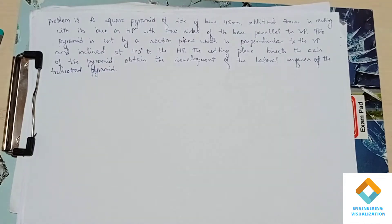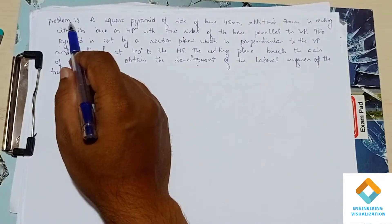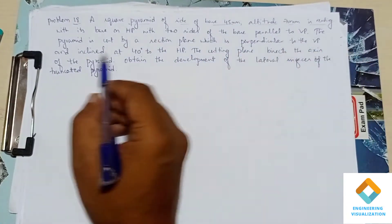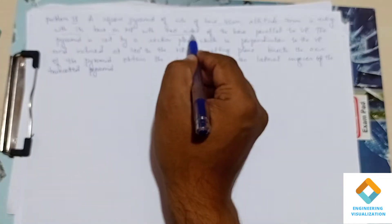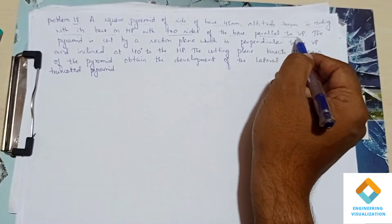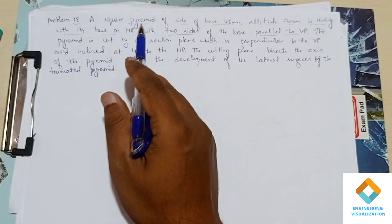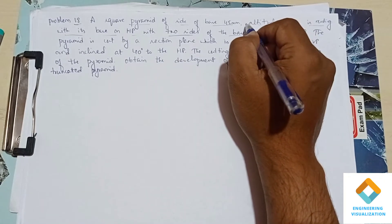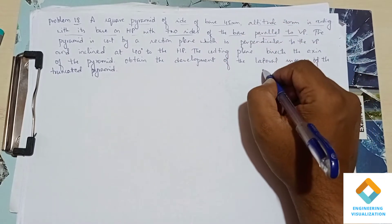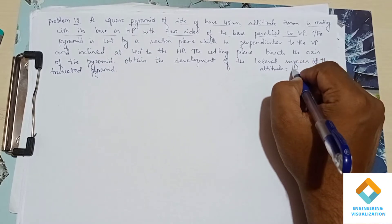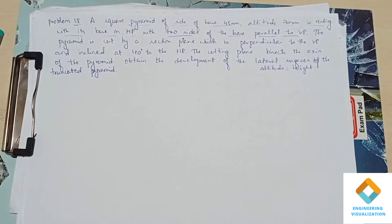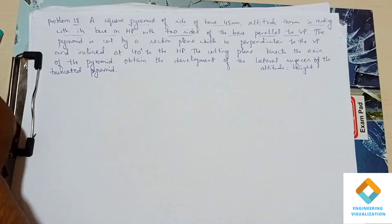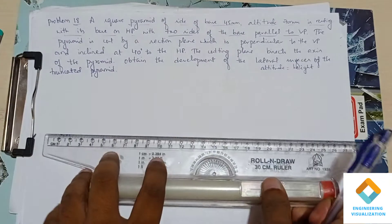Welcome to the engineering visualization channel. Today is problem number 18: a square pyramid of base 45mm and altitude 70mm is resting with its base on HP with two sides of the base parallel to VP. First, we are going to construct the square pyramid — the altitude means the height of the axis, which is 70mm.